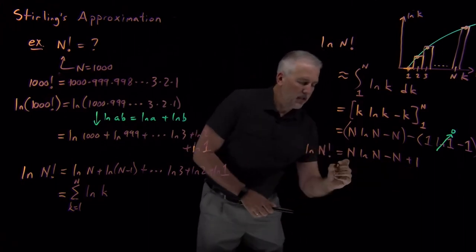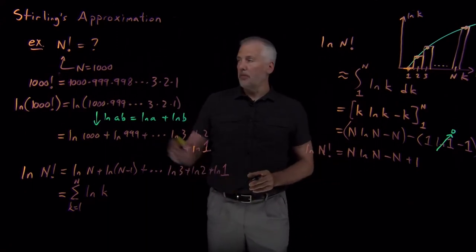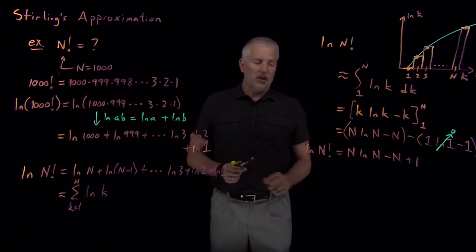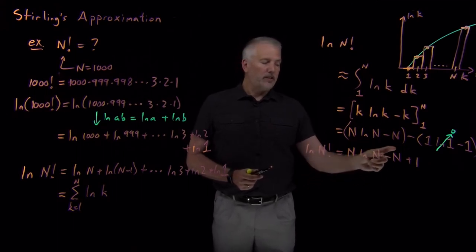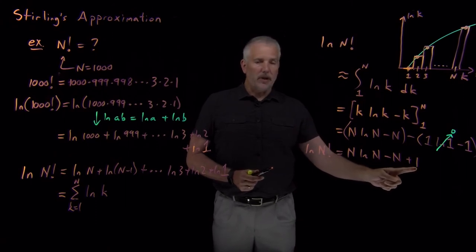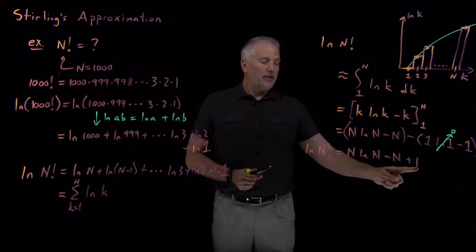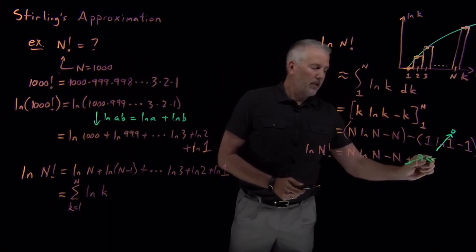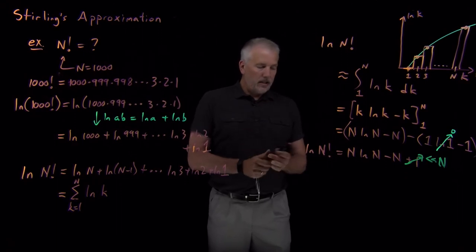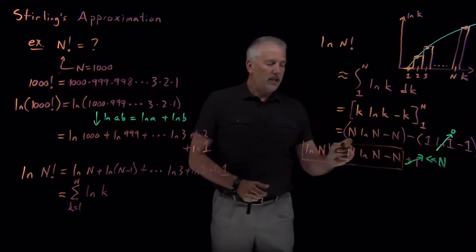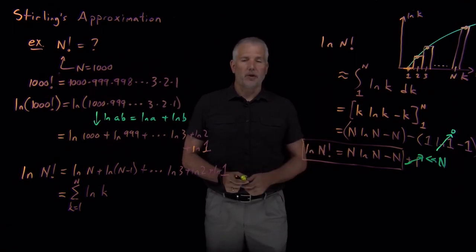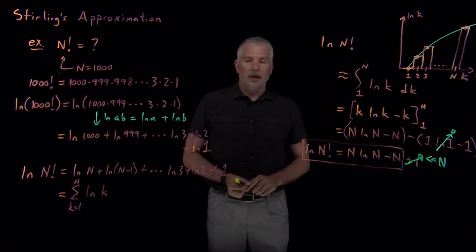In fact, the only time we're going to use this formula is when n is a pretty large number like 1,000. If n is a small number, 6 factorial, you wouldn't use this formula. You'd work it out by hand or plug it into your calculator. But when n gets to be very large numbers and your calculator can't handle it, then we're going to use this formula. And if n is a number like 1,000 or much larger, then including this 1 is not very important compared to the n. So we often ignore that 1. And if we write that log of n factorial is n log n minus n, this equation I've put in a box, that's the expression we call Stirling's approximation.